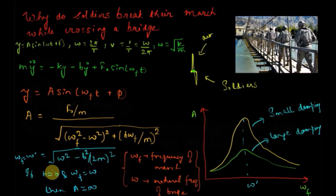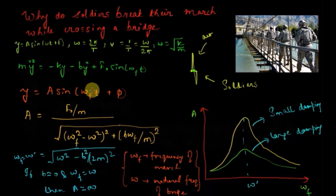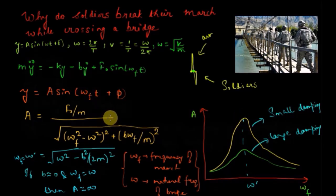If the effect of damping is zero, resonance occurs when the soldiers' marching frequency equals the natural frequency of the bridge, and the amplitude tends to infinity. For small damping at resonance, the amplitude becomes very high. This is exactly what happened in 1850 on Angers Bridge — air was still at night so damping was very low, and the soldiers were marching at the natural frequency of the bridge. Resonance occurred, the bridge oscillated at very high amplitude, and the bridge collapsed. That is why soldiers are advised to break their march when crossing a bridge.